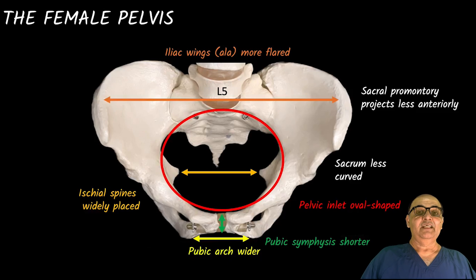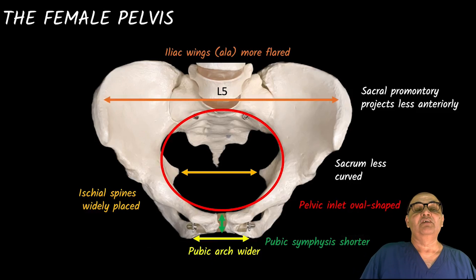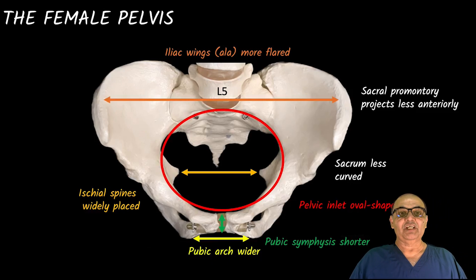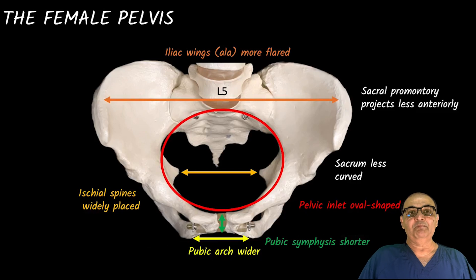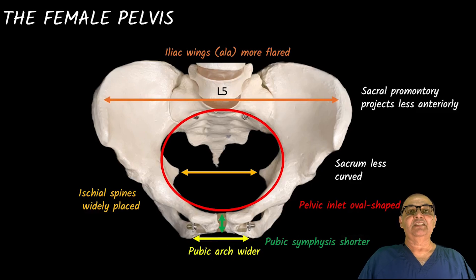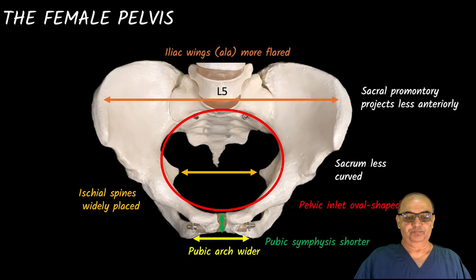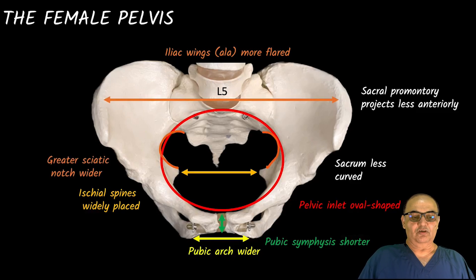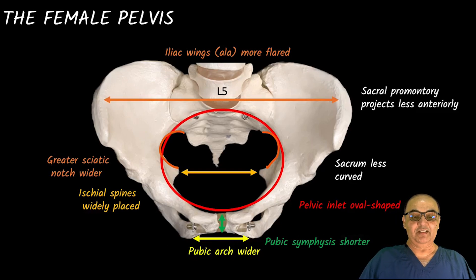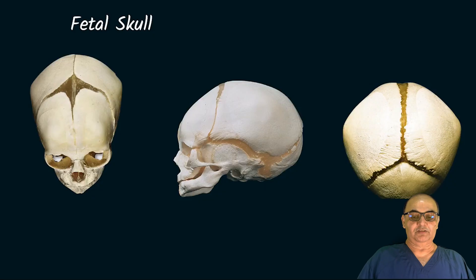The promontory is not that much coming in the way, because the female pelvis is designed for the facilitation of childbirth. The male pelvis is primarily made for strength — it is more stronger and purpose-built for strength. The female pelvis is designed for facilitation of childbirth. Now let's look at the greater sciatic notch, which is wider in the case of the female pelvis, because everything is wider if we compare with the male counterpart.